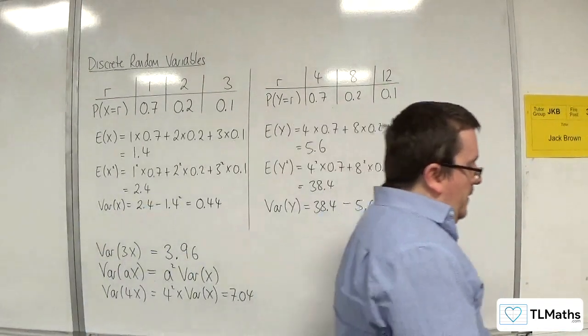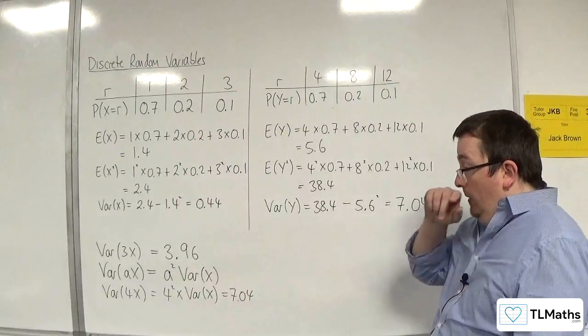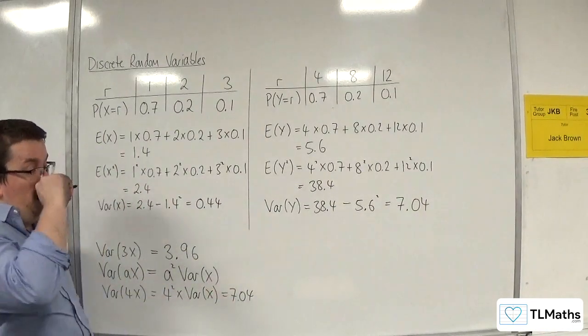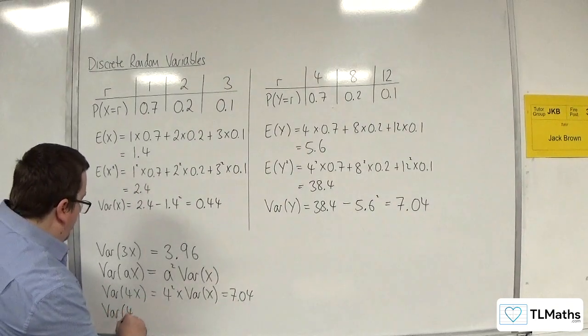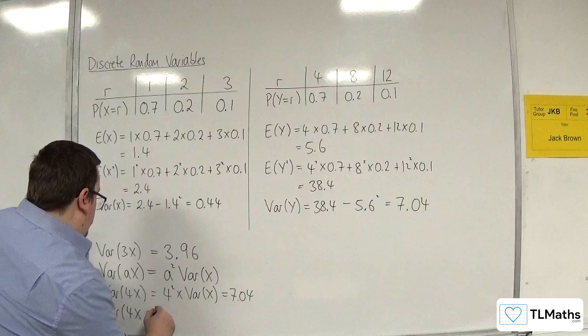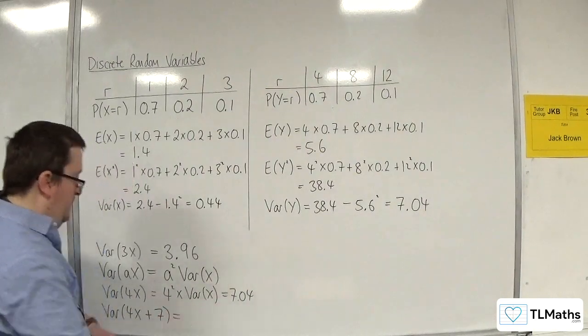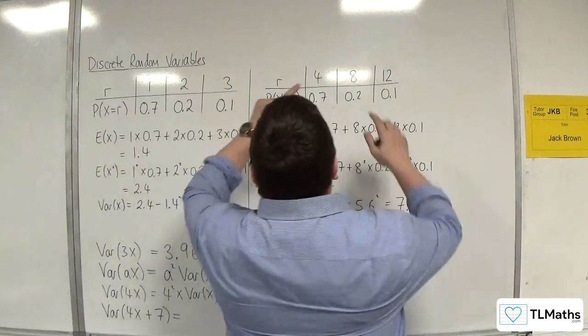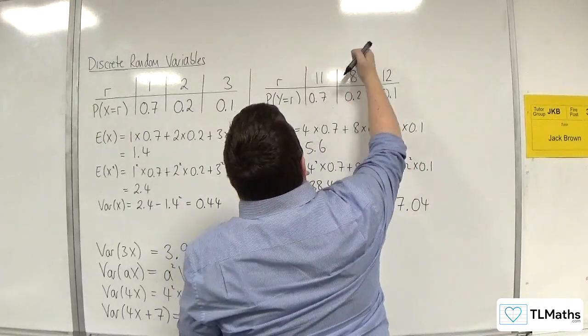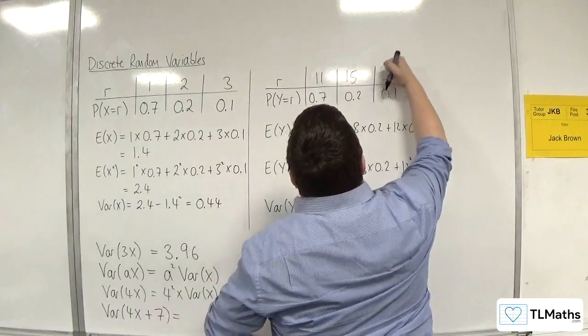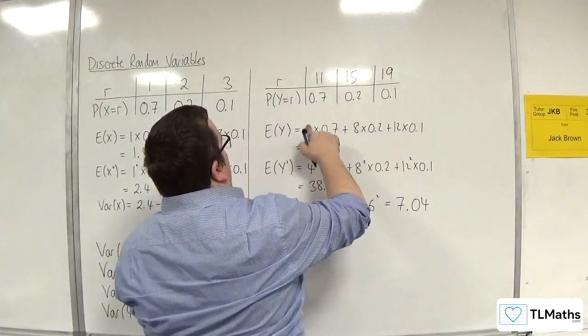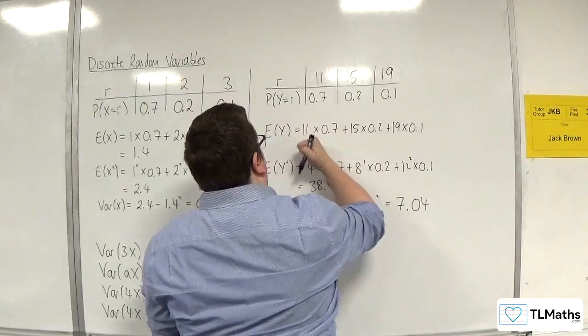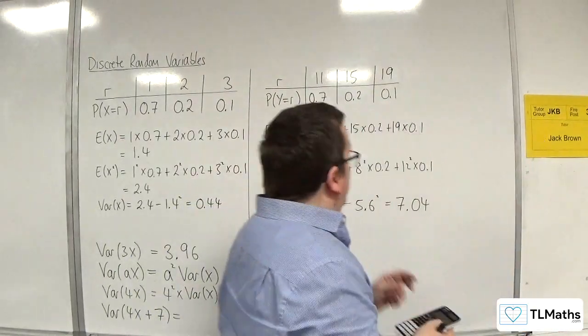But that's not all. I am interested in, we'll stick with the var of 4x, which we've got as 7.04. But what if I do var of 4x plus 7? What about that? So I would have each of those now with added 7. So 11, 15, 19.